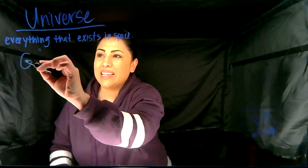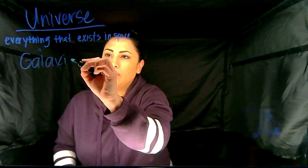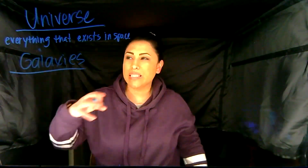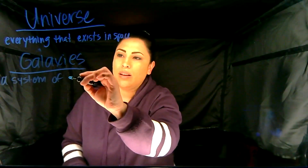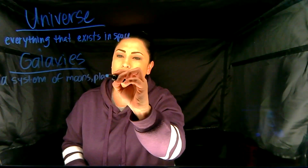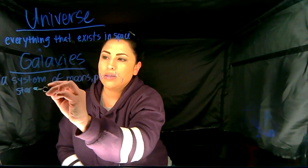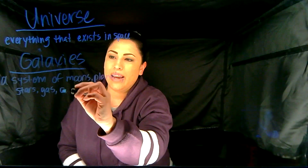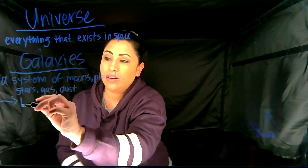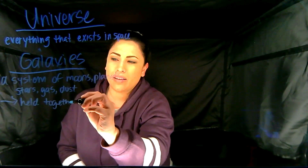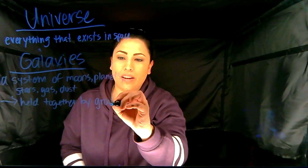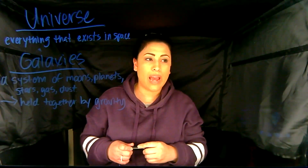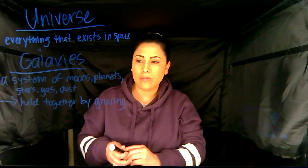If we zoom in just a little bit, we're going to look at galaxies. What is a galaxy exactly? Well, it's a system of moons, planets, stars, gas, and dust — all held together by gravity.